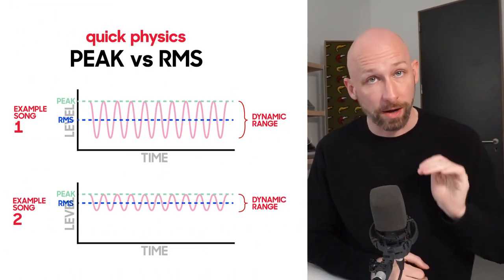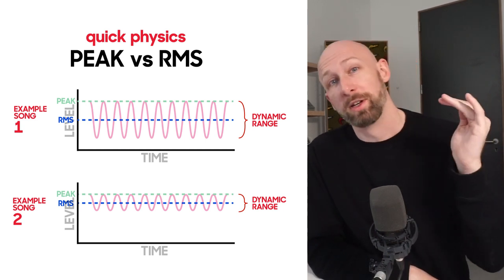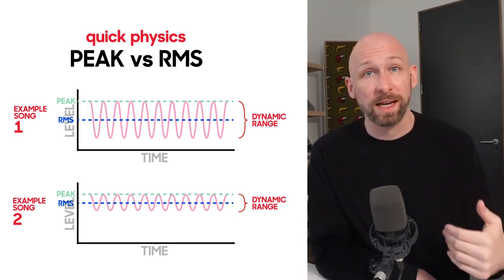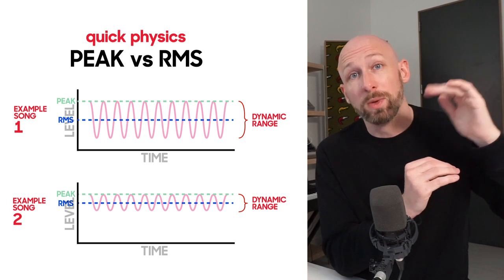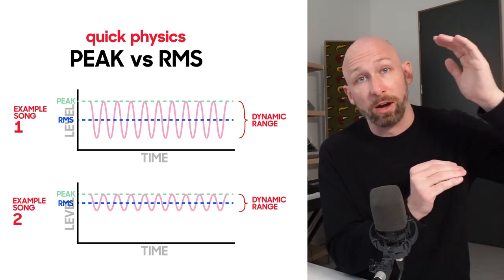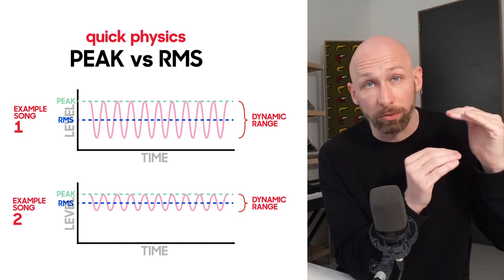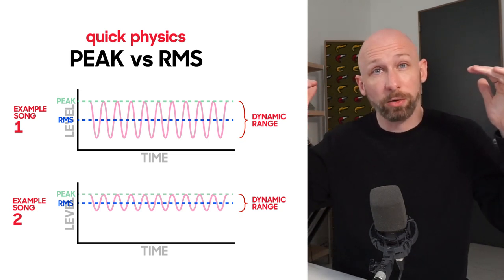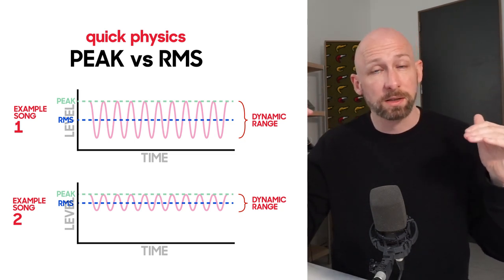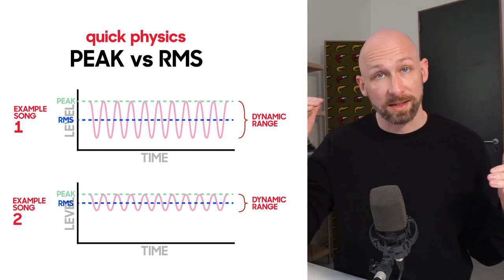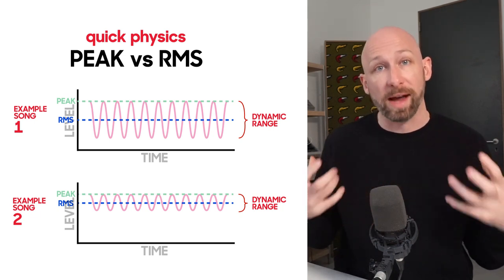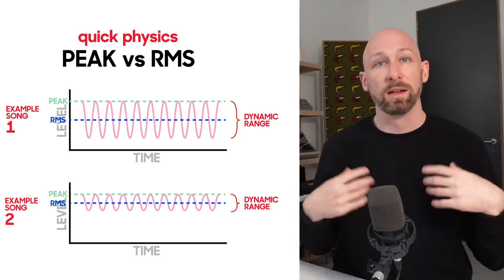Let's recap where we were. In the last video we learned about peak volume and RMS volume. Peak volume is the loudest part a signal gets, and RMS volume is the average level of the signal over the past half a second or so. If a signal's peak volume and RMS volume are far apart, we say it has a large dynamic range; if they are close together, we say it has a small dynamic range. We also learned that if two different signals have the same peak volume but one has a higher RMS, we'll subjectively experience that one as louder, more punchy, warmer — all kinds of positive attributes — because in general we tend to think louder is better.